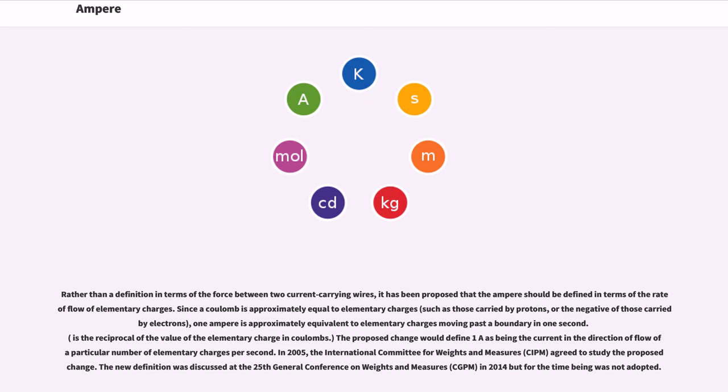As the reciprocal of the value of the elementary charge in coulombs, the proposed change would define 1 A as being the current in the direction of flow of a particular number of elementary charges per second. In 2005, the International Committee for Weights and Measures (CIPM) agreed to study the proposed change.